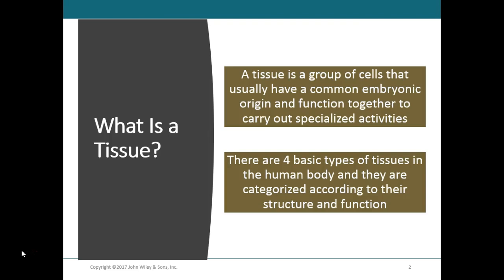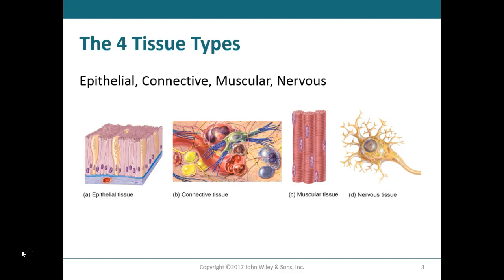The four basic tissue types are classified based on their structure and function — the type of cells that make up the tissue and what the tissue does. Epithelial tissues cover body surfaces, line hollow organs, body cavities, and ducts, and also form glands. Connective tissues protect and support the body and its organs, bind organs together, store energy as fat, and help provide immunity.